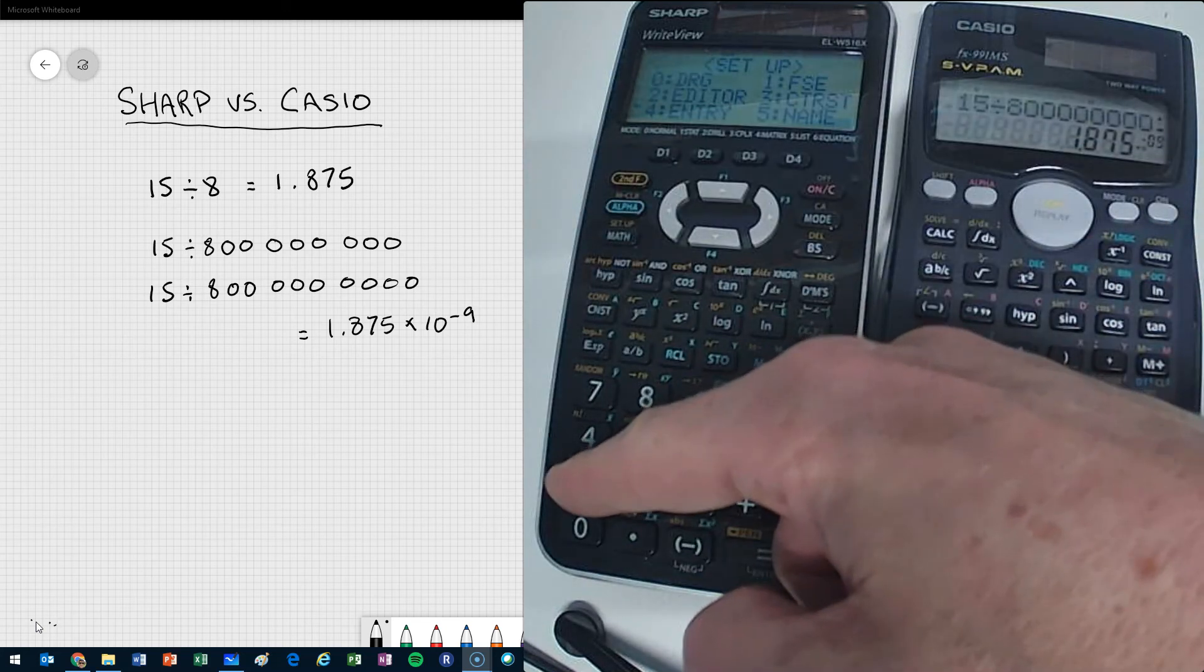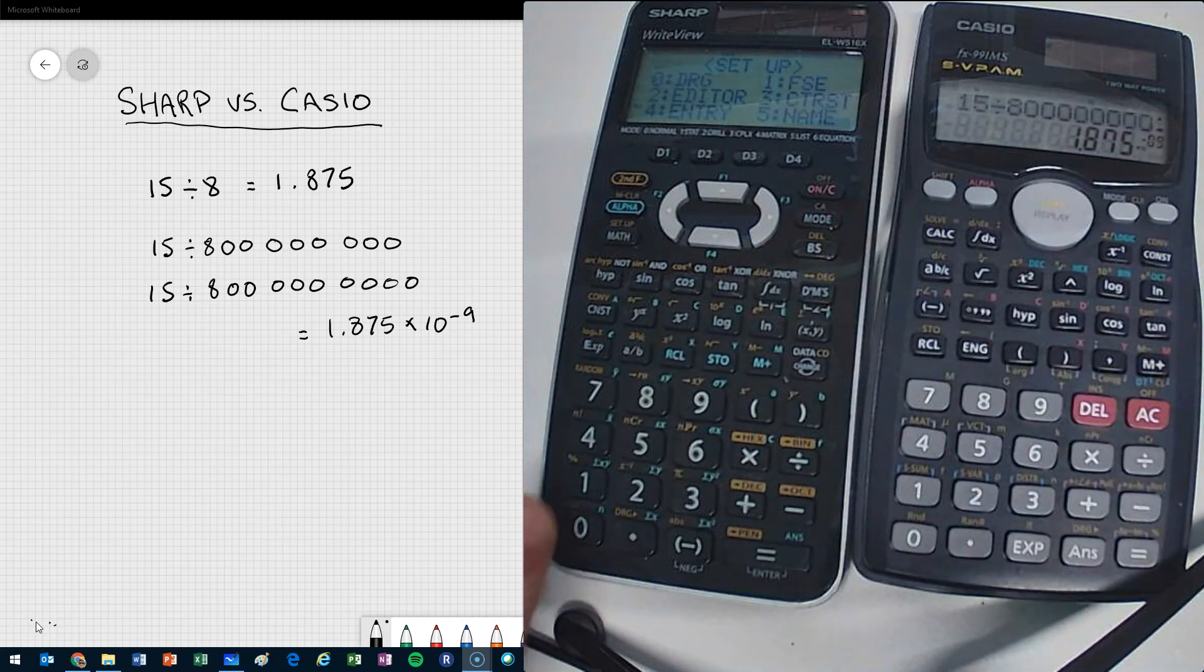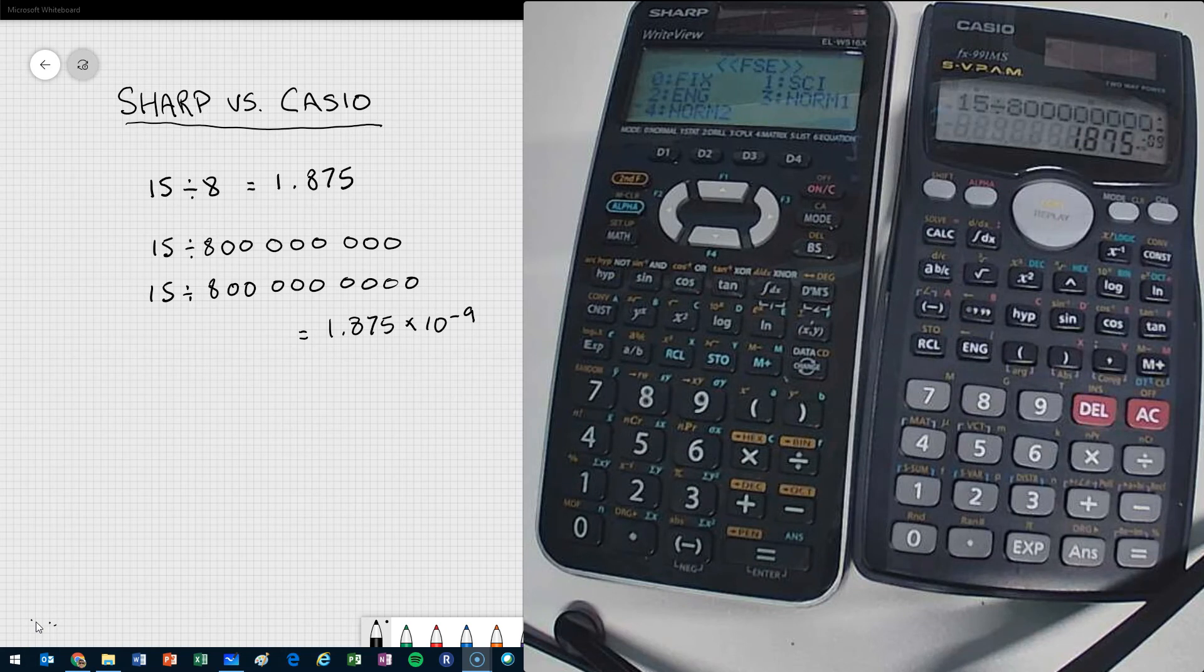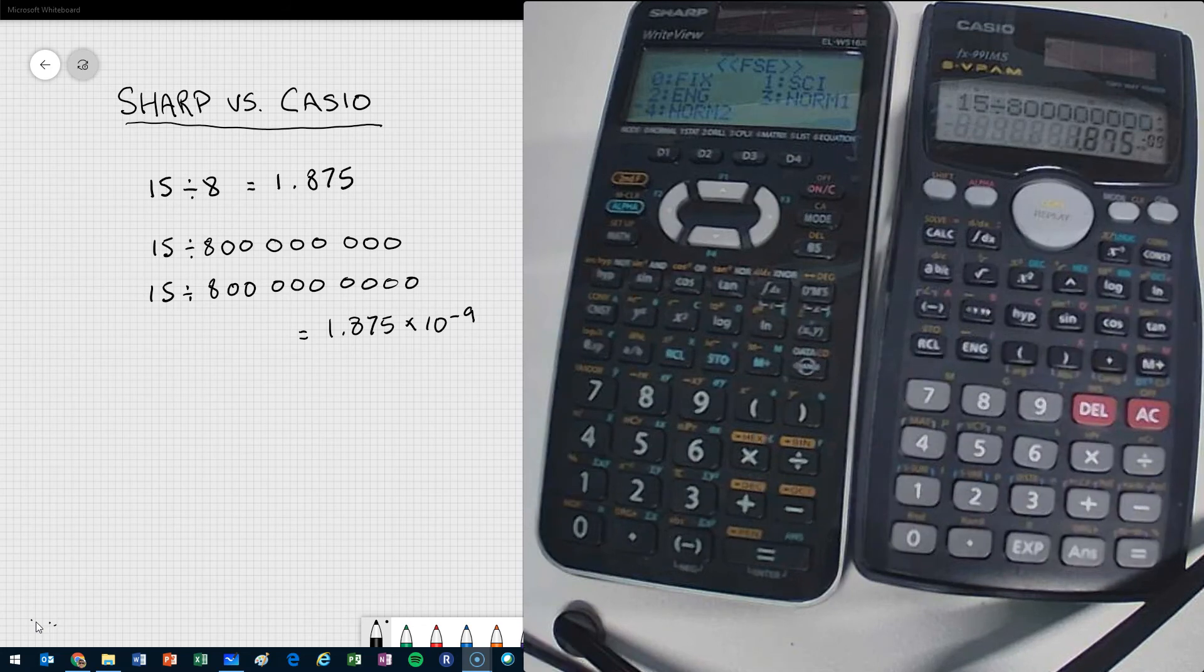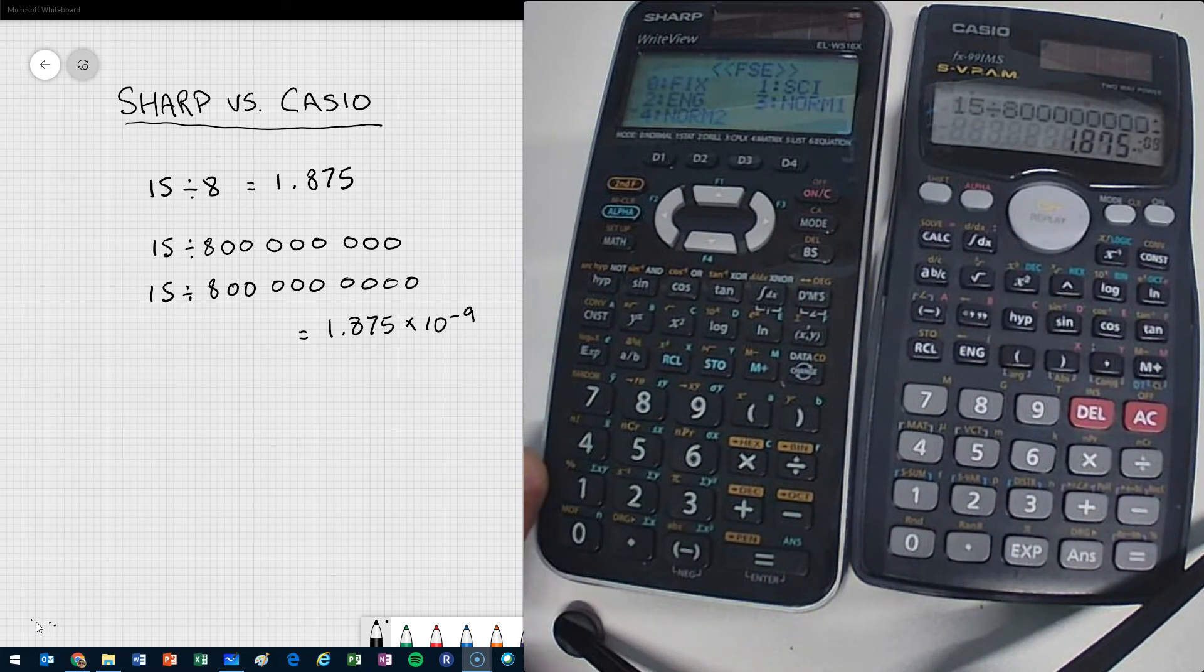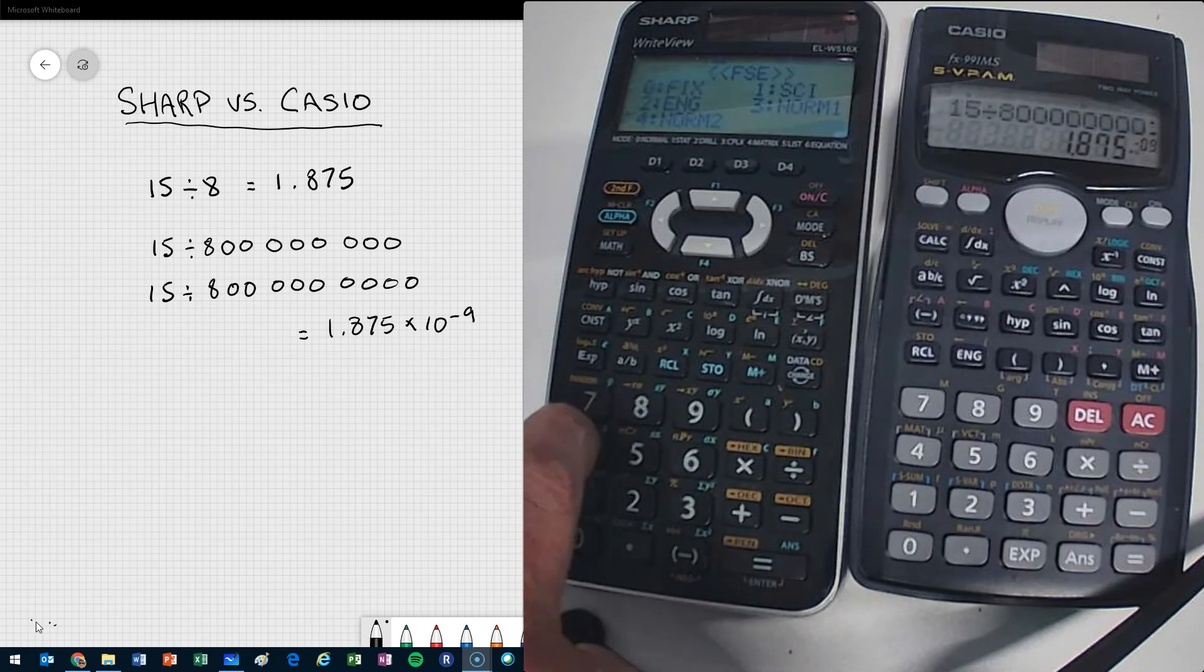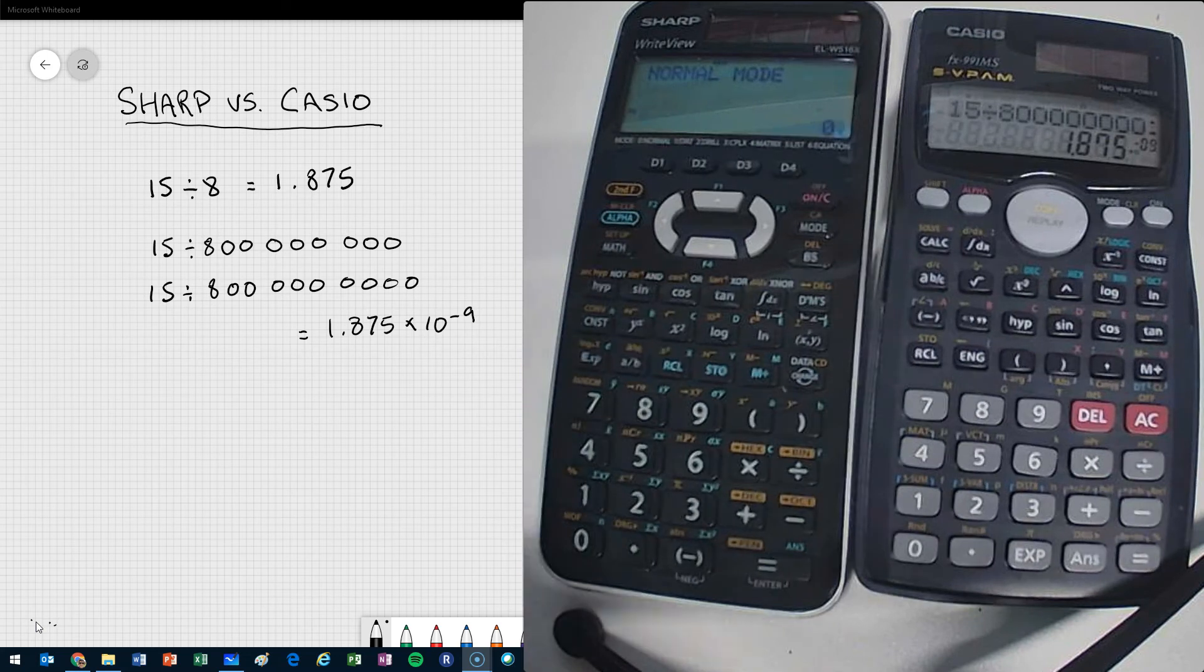We have this FSE, so number 1. And then we can choose between a few different functions or setups, and normal 2, number 4, is the one that we would be wanting to use. So I'm going to select that guy, normal 2, and now let's take a look.